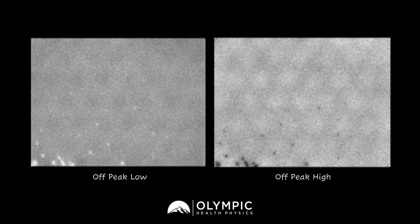With the off-peak low and off-peak high images, we're able to shift the energy window down 10% to center on 126 keV and also shift it up 10% to image on 154 keV, instead of the traditional 140 keV that we would image for tech. In the off-peak high images, you can see some of the PM tubes within the image — that's normal. It's all of the gross non-uniformities that are really indicating that this crystal has been hydrated.